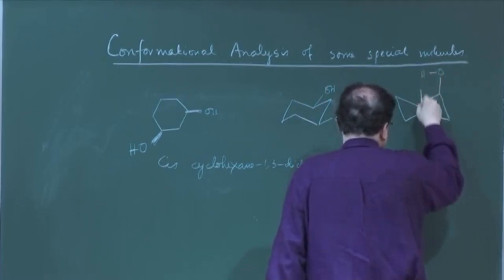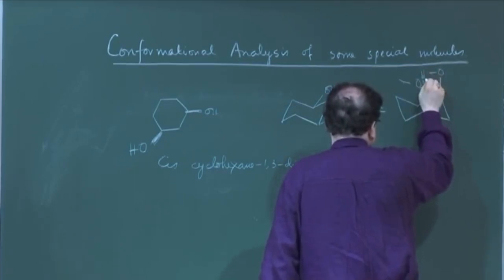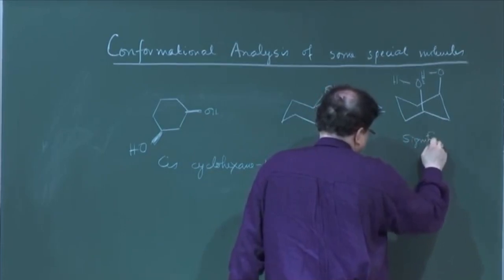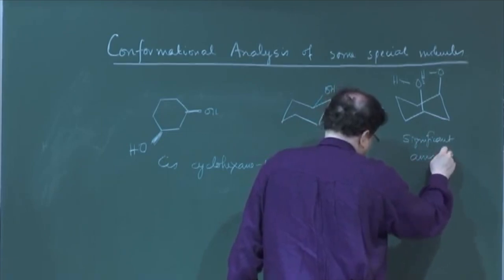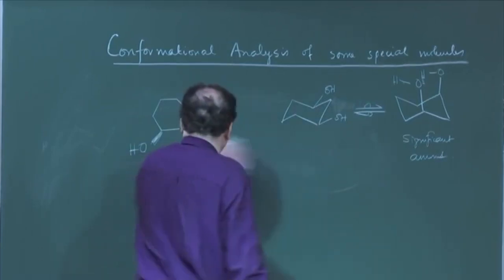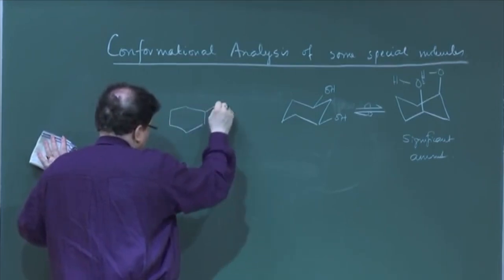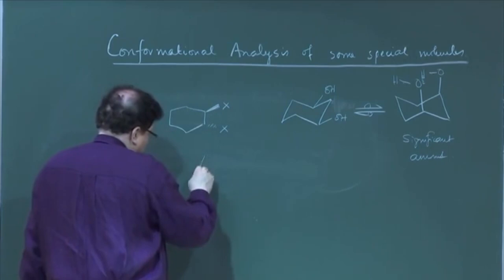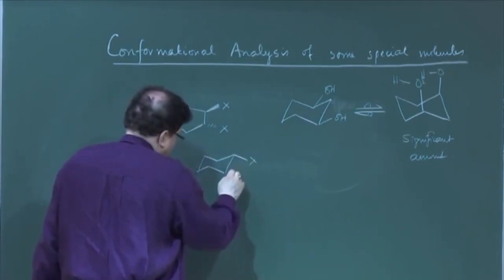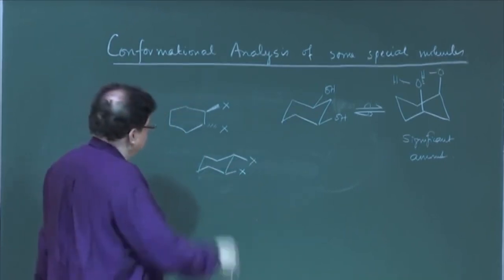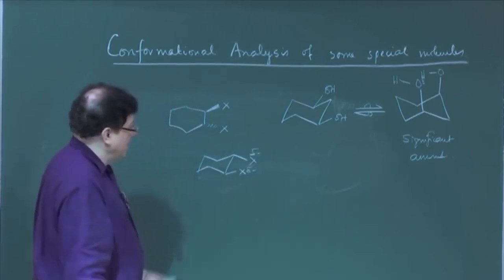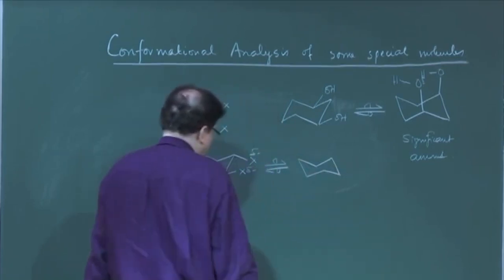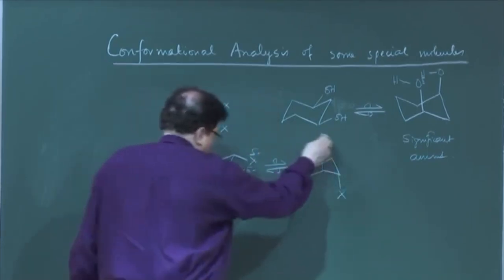When the OH groups flip to the axial position, one is here and the other is here, and there is a hydrogen bond between this hydrogen and the oxygen. So this axial conformer is now present in significant amount. Another system — for 1,2-dihalo compounds, due to dipole-dipole repulsion in the trans compound, if X is a halogen, because of the repulsion between the two delta-negatively-charged X groups, the molecule tends to flip and will be present in substantial amount in the form where the two X's are far apart.